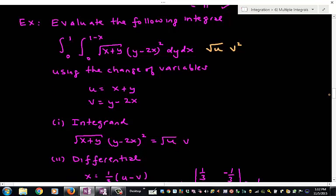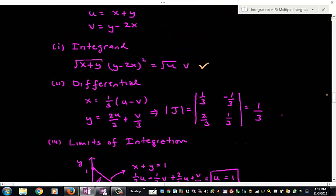First of all, we have to change the integrand. That's easy. I cold-bloodedly set this up so the integrand would be easy to evaluate. Then I have to do the differential, and I'll leave this as an exercise to you. But if you notice, this is just a linear system of equations. I can easily solve for x and y in terms of u and v. When I take the partials and put them in the Jacobian matrix and evaluate the determinant, I just get one-third. I'll let you go through the math and verify that.